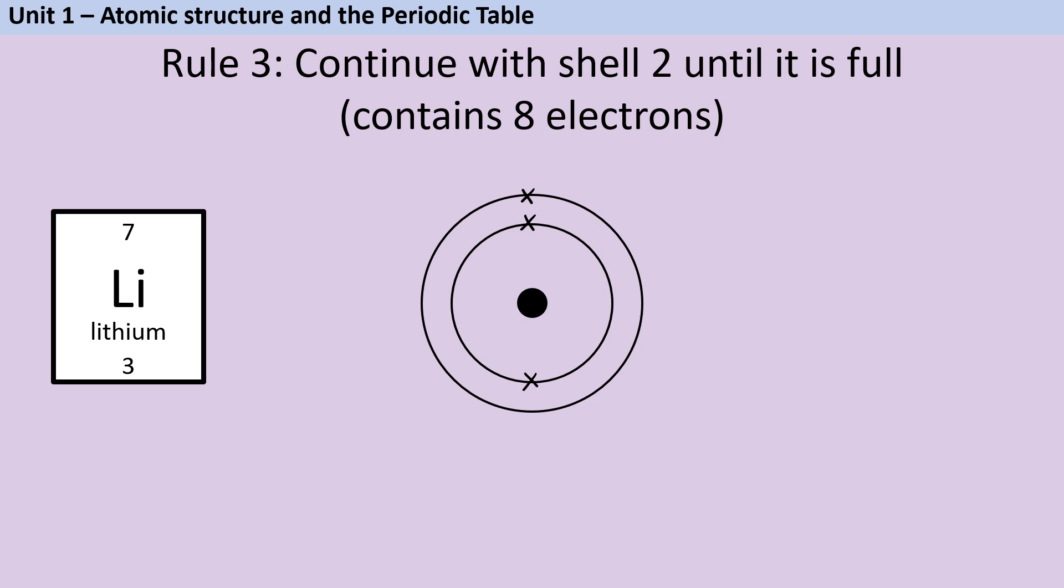This second shell can contain up to eight electrons. Right now we're only putting one in there because lithium only has three in total but as we continue we'll steadily add more. We can represent this electron arrangement numerically by putting in brackets two comma one. That first two shows me that there are two electrons in the first shell and then the one after the comma shows me that the second shell contains one electron.